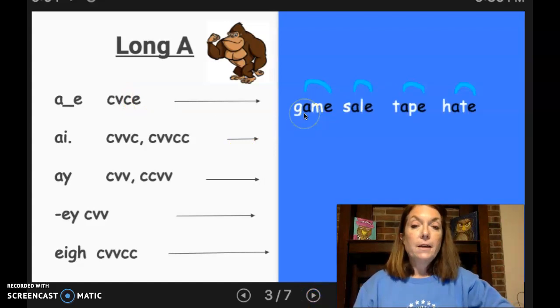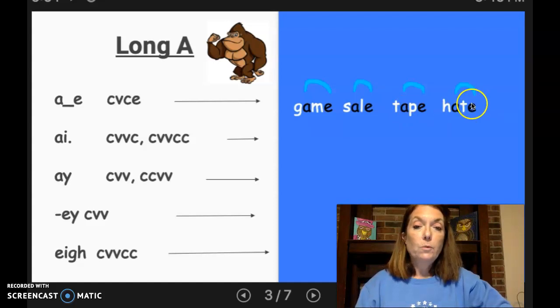Let's see what words we have. We have game, sale, tape, hate. If we didn't have that E there, that word would be hat. If we didn't have that E there, it would be tap. So the E is what makes it say the long vowel sound.